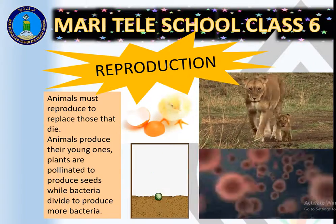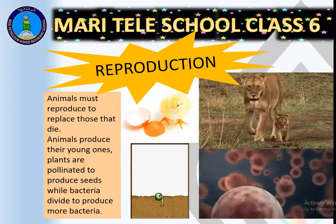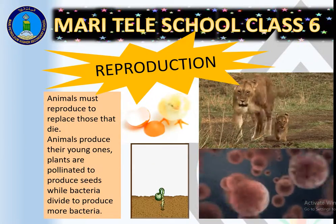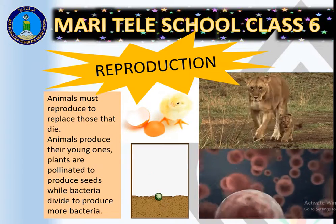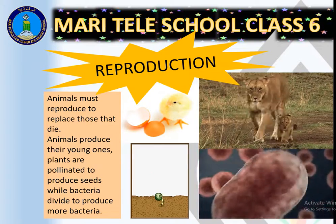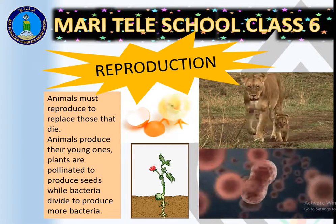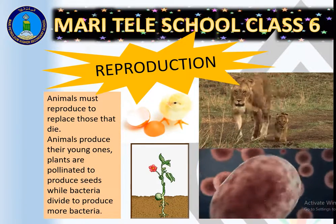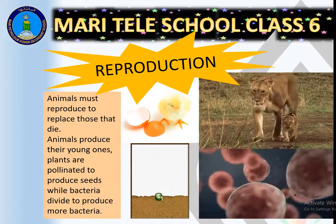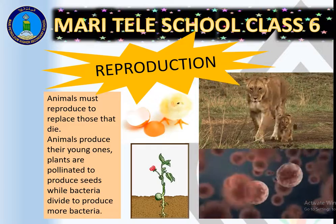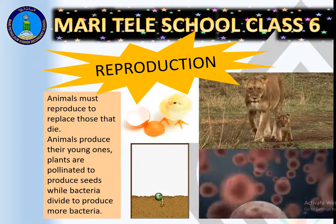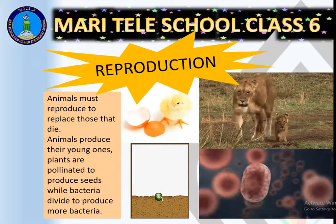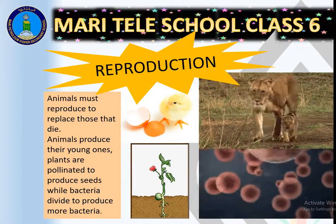There are different modes of reproduction — making copies so that life continues. If reproduction stops, that species may become extinct. So reproduction must continue so new individuals are produced. This is a life process not present in non-living things — all living beings reproduce.